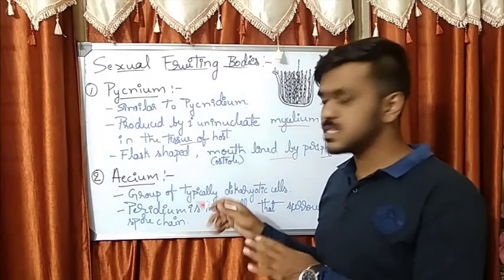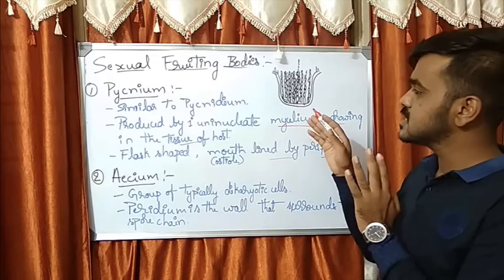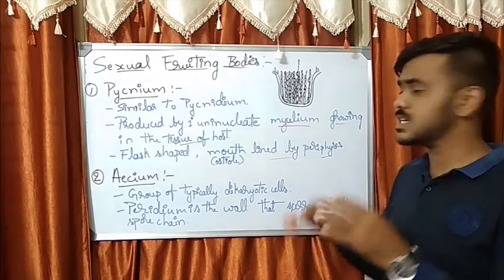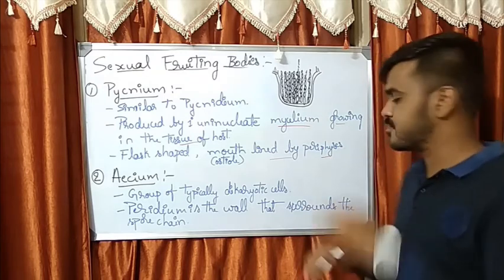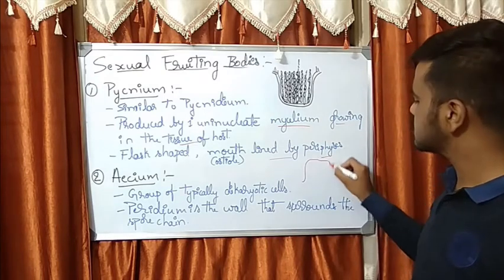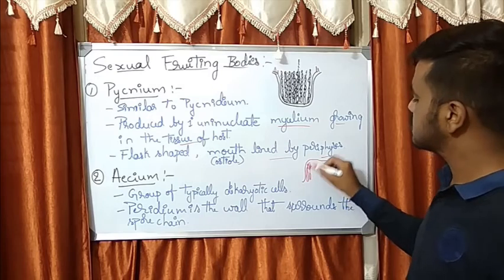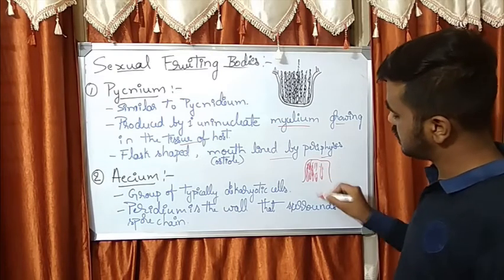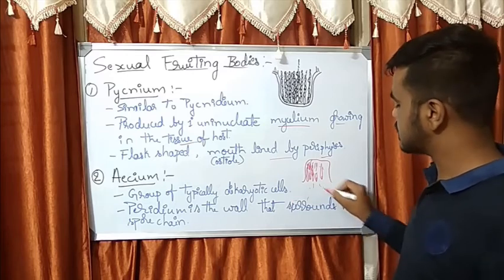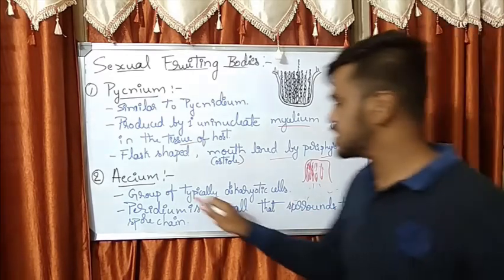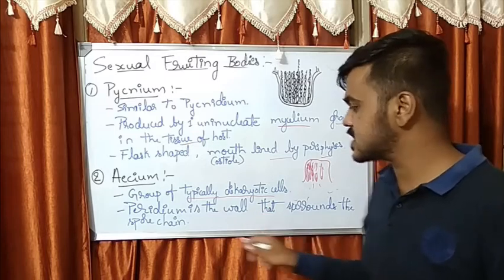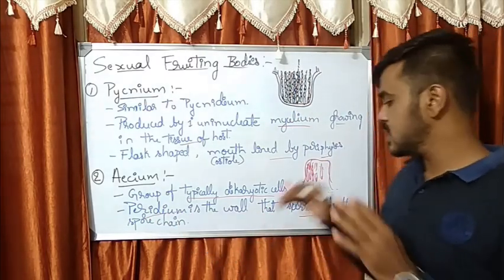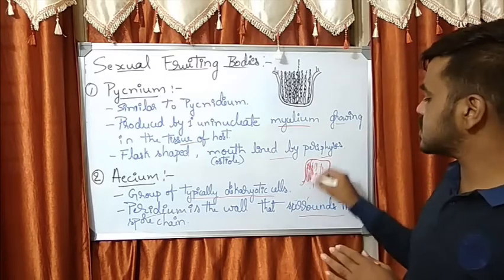Next comes the aecium. The aecium is similar but reversed — turned downwards. The spores are formed and released in this manner. The aecium is typically a group of dikaryotic cells, and the peridium is the wall that surrounds it.